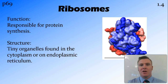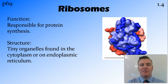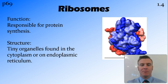Ribosomes are responsible for protein synthesis. They read RNA and produce proteins. They're very, very small, consisting of two tiny subunits, and they're found floating around in the cytoplasm as free ribosomes, or more commonly, bound to the endoplasmic reticulum.